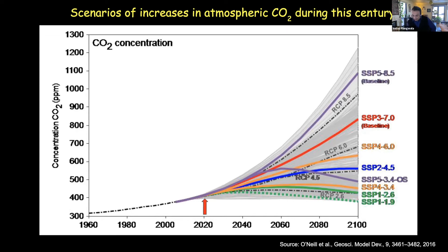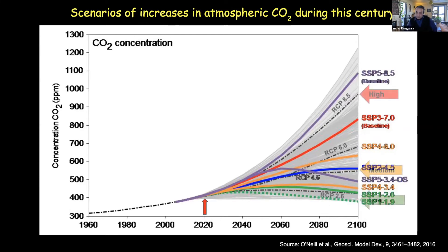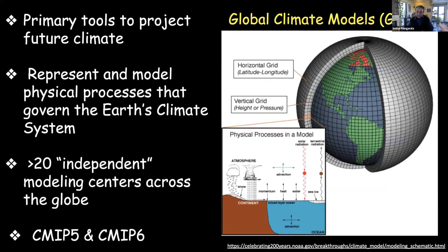Terms used quite a bit in the community are RCPs and SSPs — they refer to particular emission pathways or scenarios, where 'P' stands for pathway. Within these scenarios you have low, medium, and high emission scenarios. The key question is how climate will change under these different scenarios and what impacts they will produce. To understand that, we need a tool called the global climate model, one of the primary tools used to project future climate.